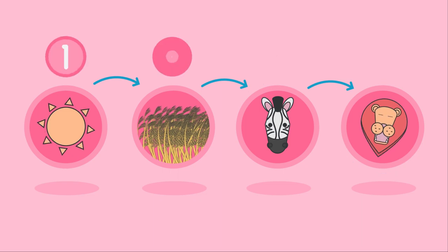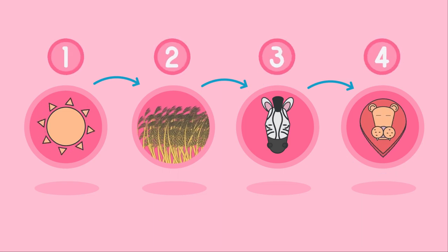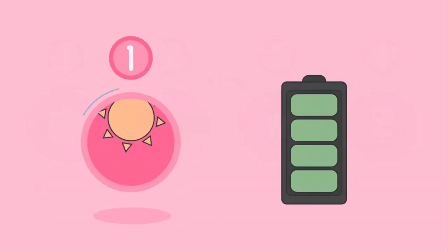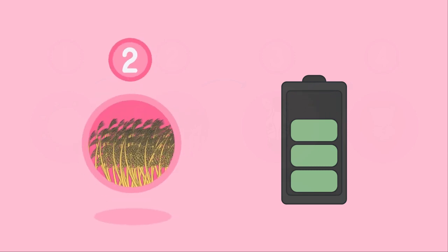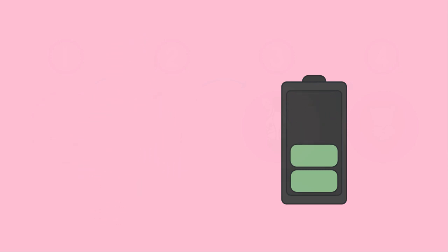Typically food chains involve around 4 steps. It is unusual for them to be longer because energy is lost between each step and so the energy available for the next organism decreases.